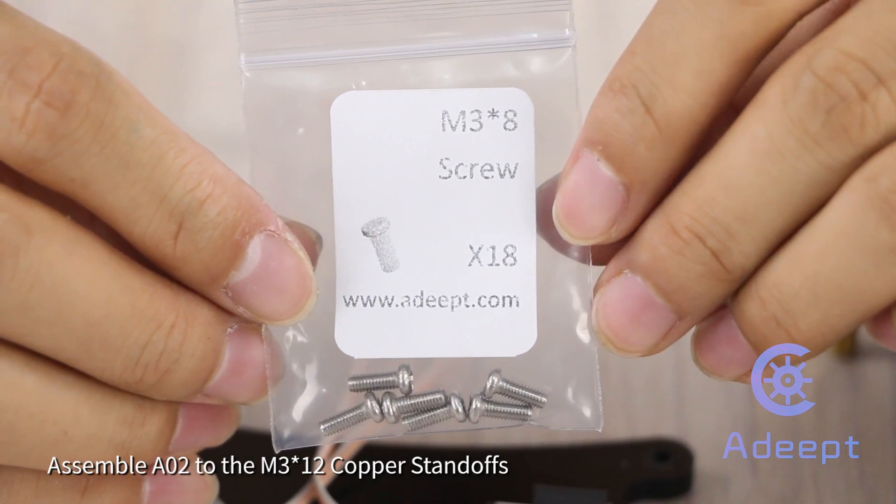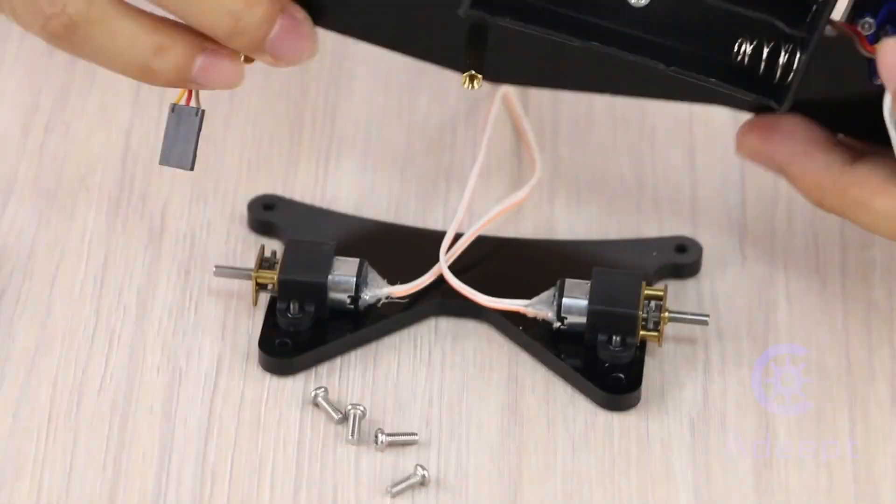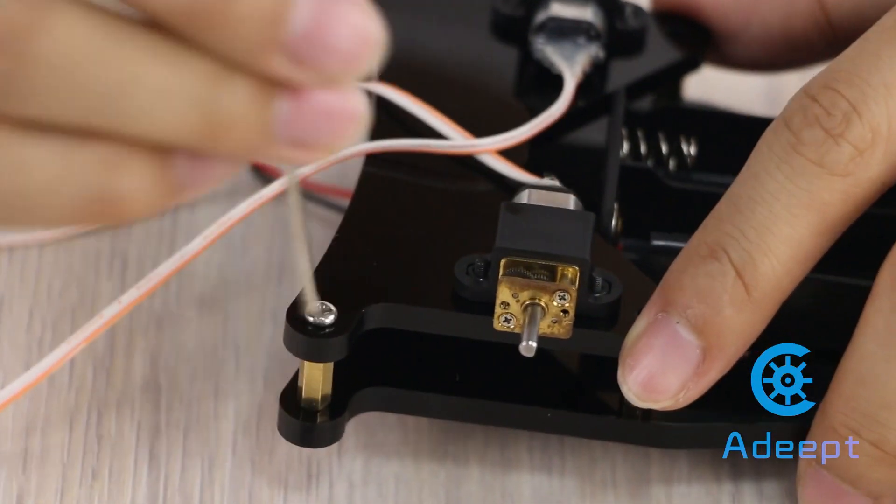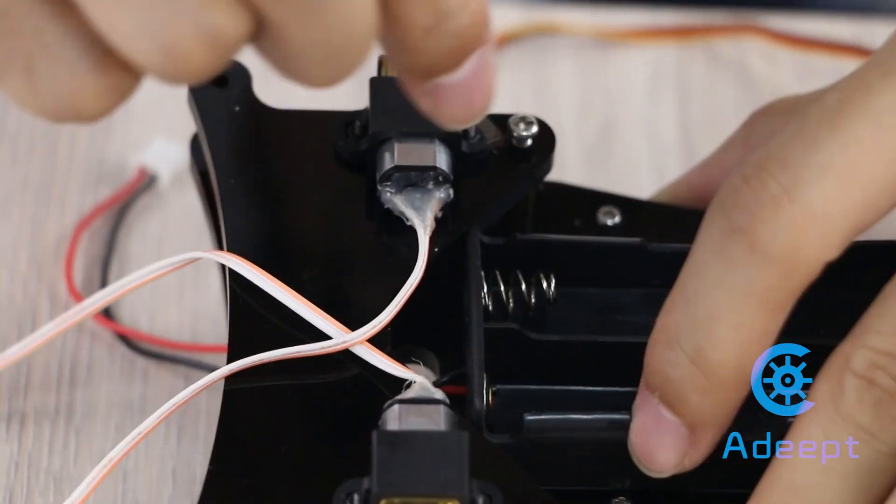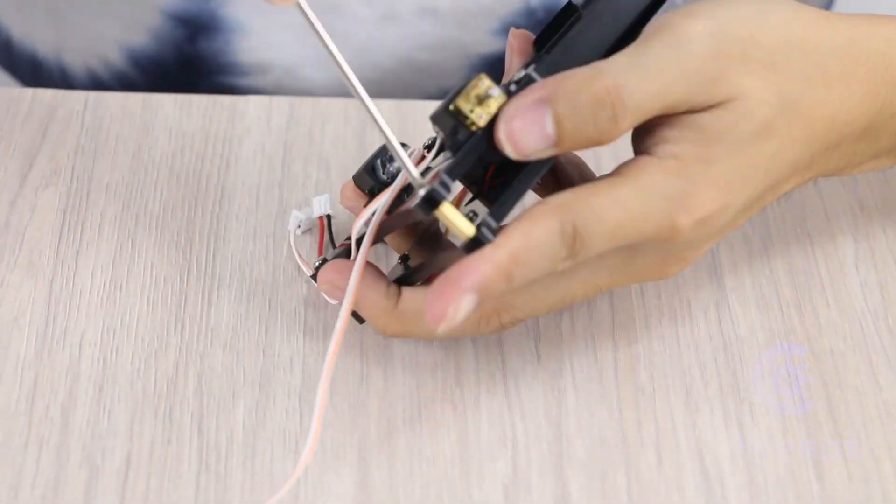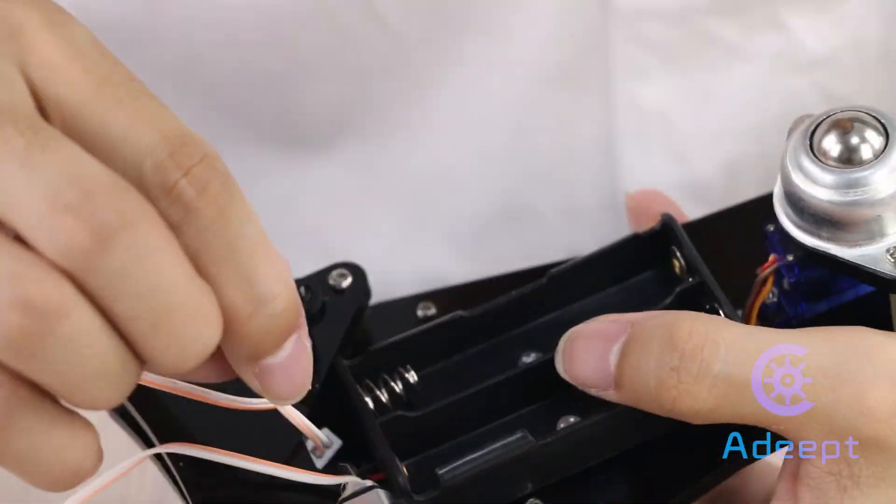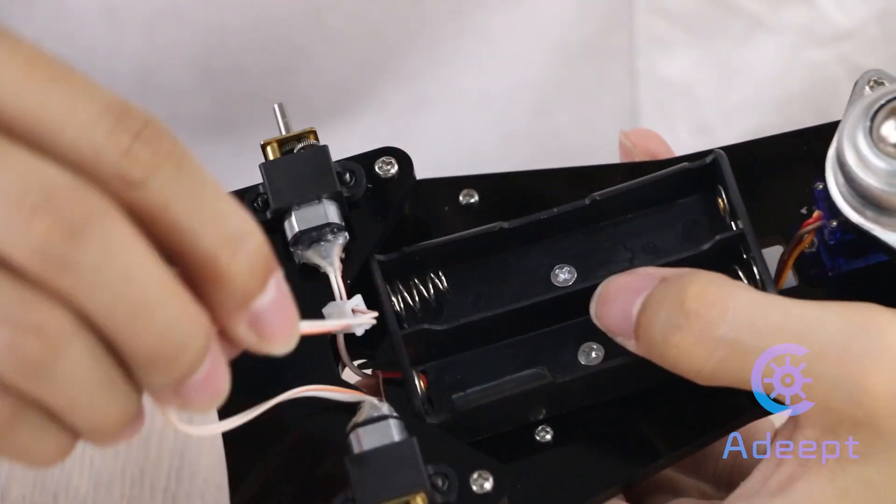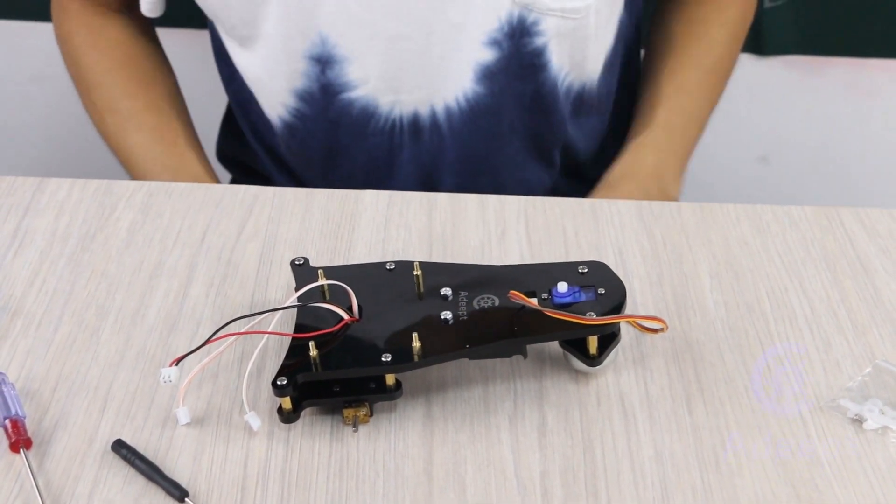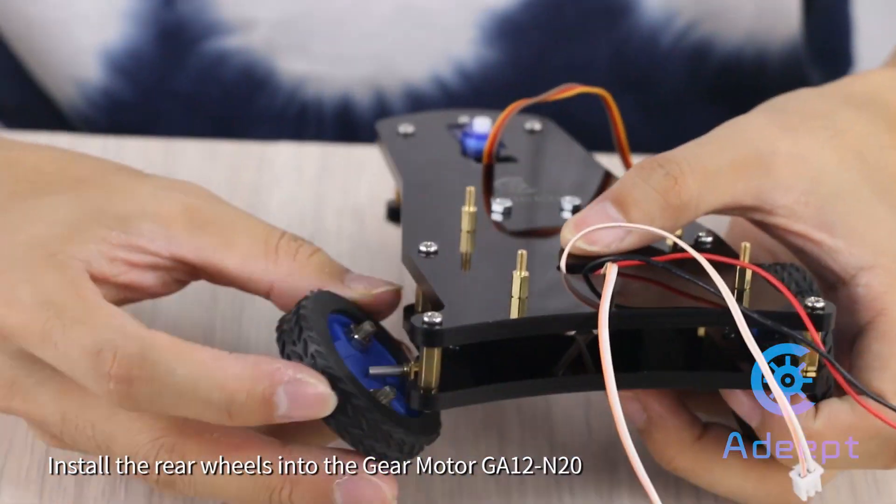Assemble A02 to the M3 multiple 12 copper standoffs. Install the rear wheels into the car.